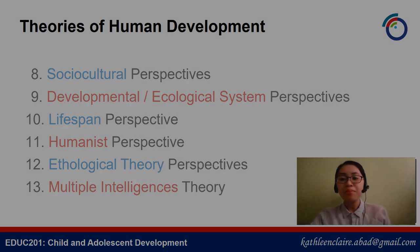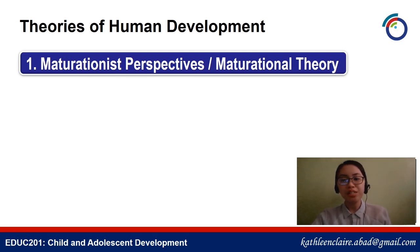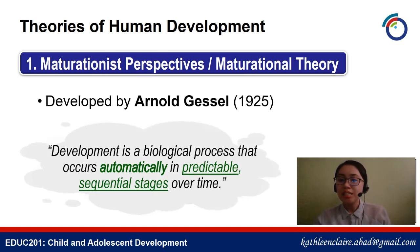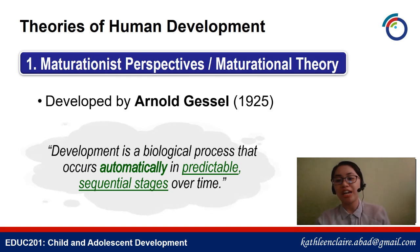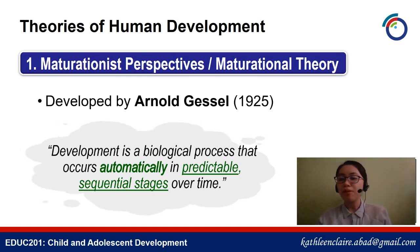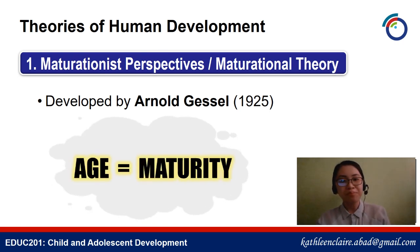Let's start with the maturationist perspective, also known as the maturational theory, developed by Arnold Gesell in 1925. According to him, development is a biological process that occurs automatically in predictable, sequential stages over time. From a maturationist perspective, even without guidance from parents or teachers, our minds and bodies develop automatically as we age. So for them, age equals maturity.